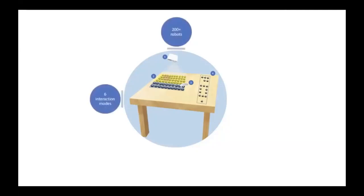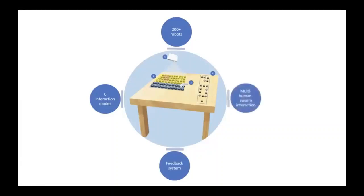There are six interaction modes — called painting modes — that we've developed so the human can interact with the robots. There is a feedback system: whenever the human interacts with the robots, the robots give feedback through their LEDs so the human can confirm their interaction is taking place. Finally, there is multi-human swarm interaction, meaning multiple humans can interact with the swarm simultaneously.